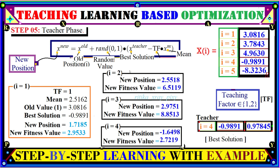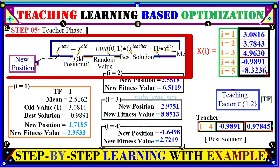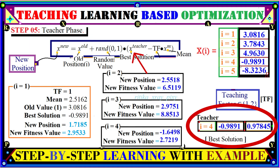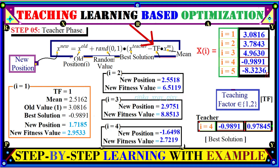After computing the mean, we enter the teacher phase, where we generate new solutions — new positions for learners in the search space. Using the mathematical model, the new solution equals the older position plus a random value, plus the best solution (teacher, individual four) minus the teaching factor (1 or 2) times the mean computed earlier.